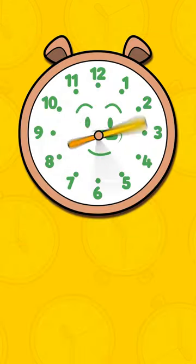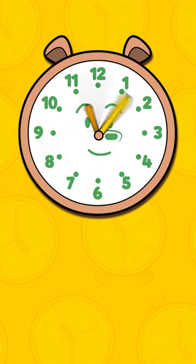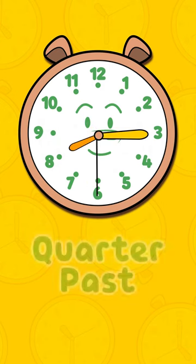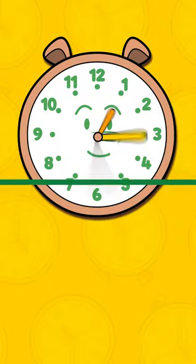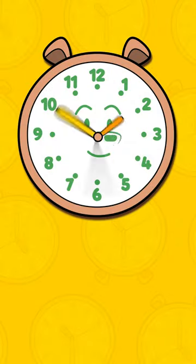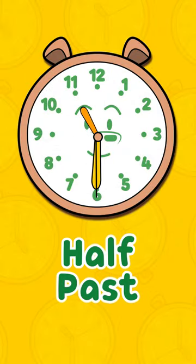When the long hand is on the three, we say it's quarter past. When the long hand is on the six, we say it's half past.